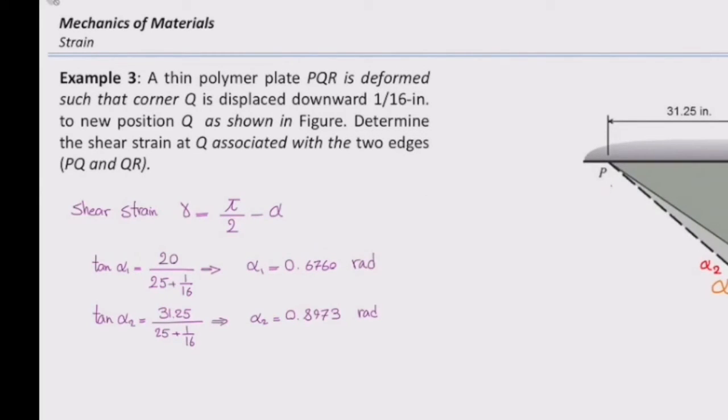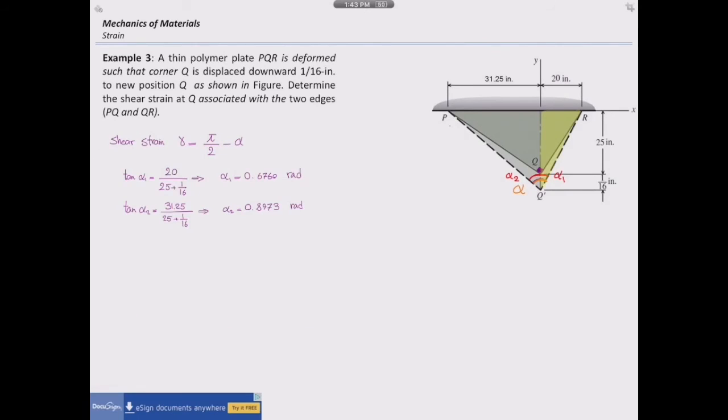And alpha 2 would be equal to 0.8973 radian.